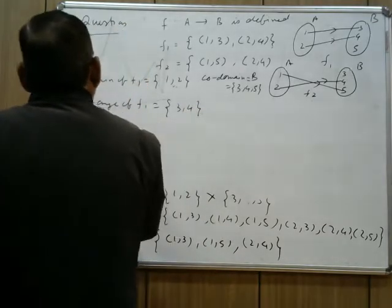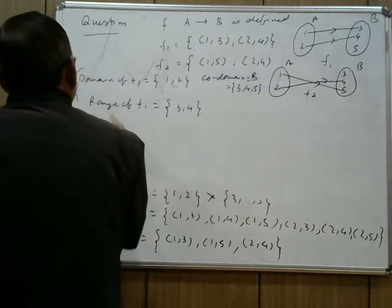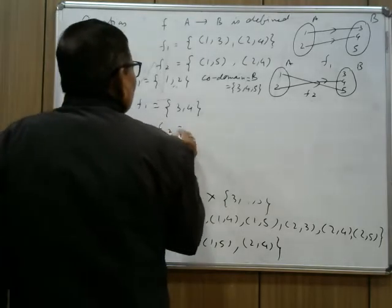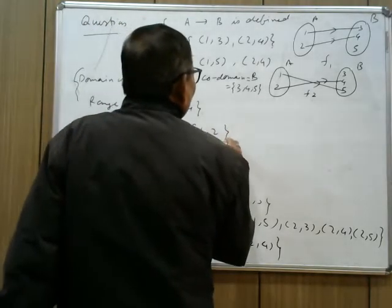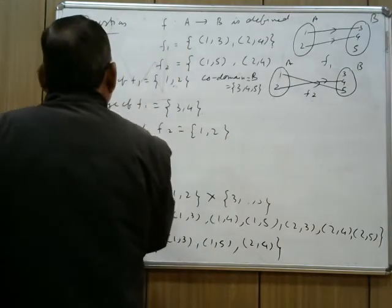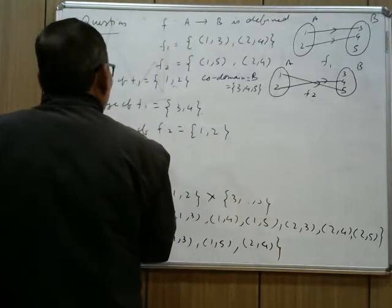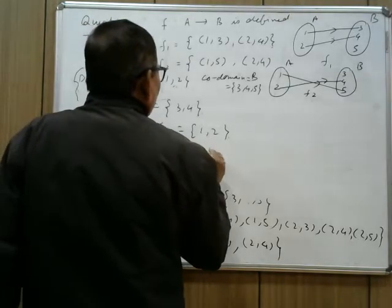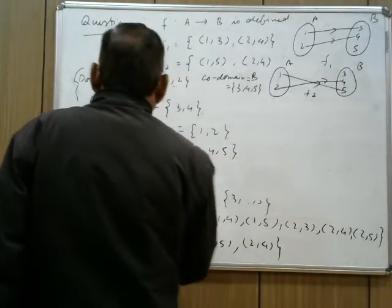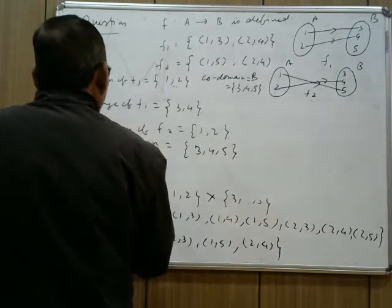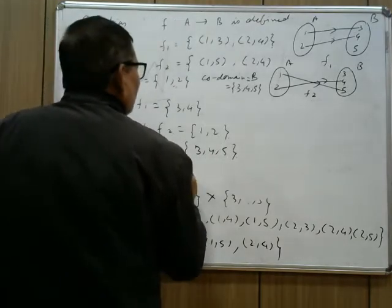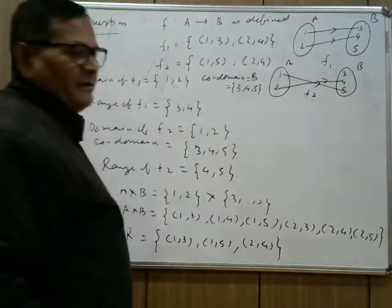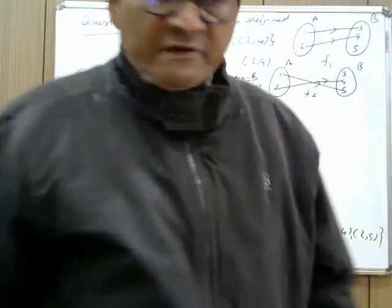In f2, association of 1 is 5 and 2 is 4, so f2 also satisfies both conditions of a function. Domain of f1 is {1,2}, codomain is set B = {3,4,5}, and range of f1 is {3,4}. Domain of f2 is {1,2}, codomain is set B = {3,4,5}, and range of f2 is {4,5}.